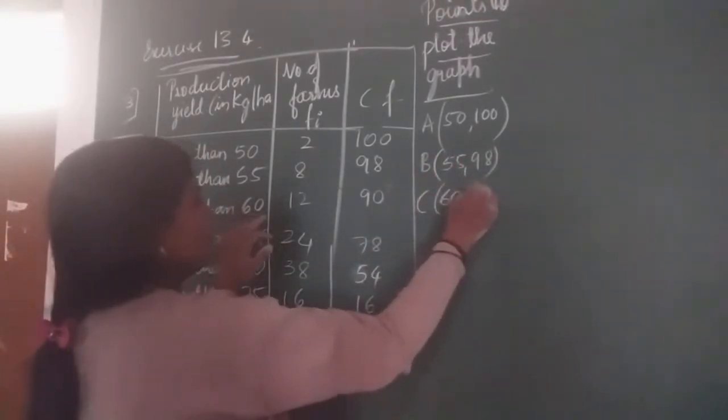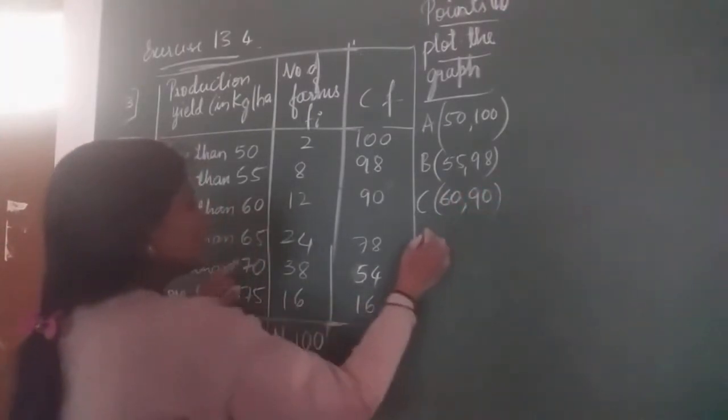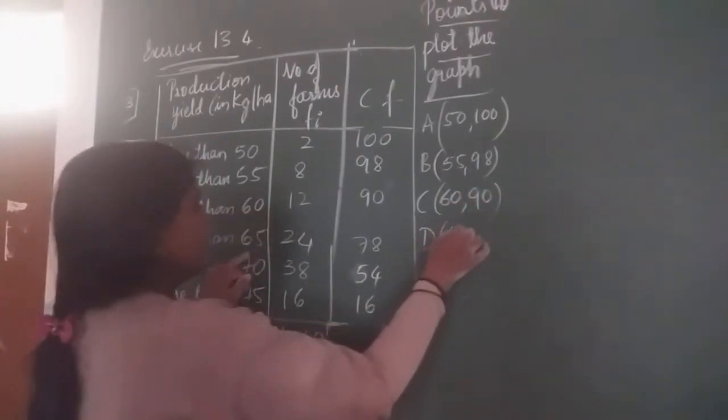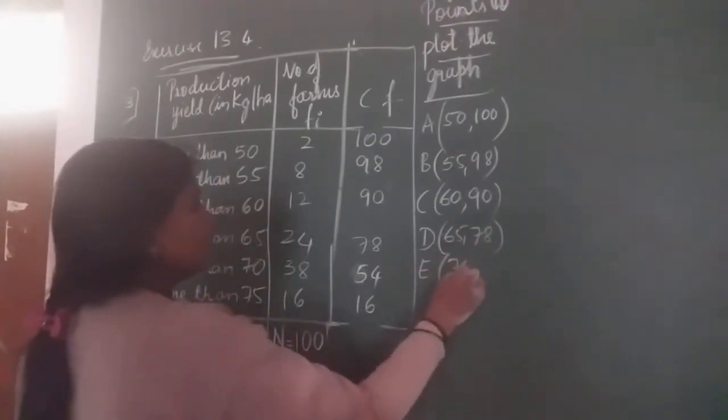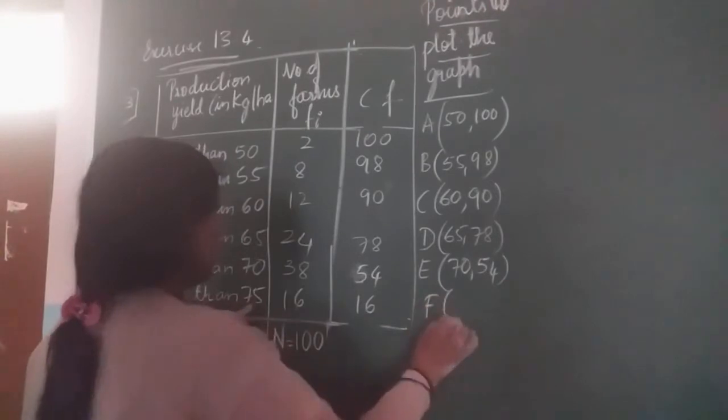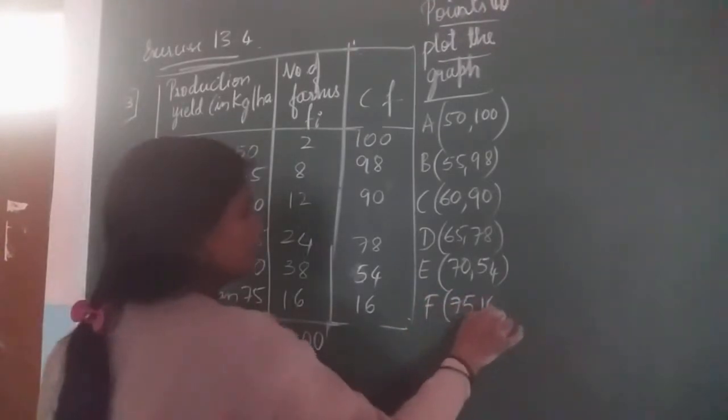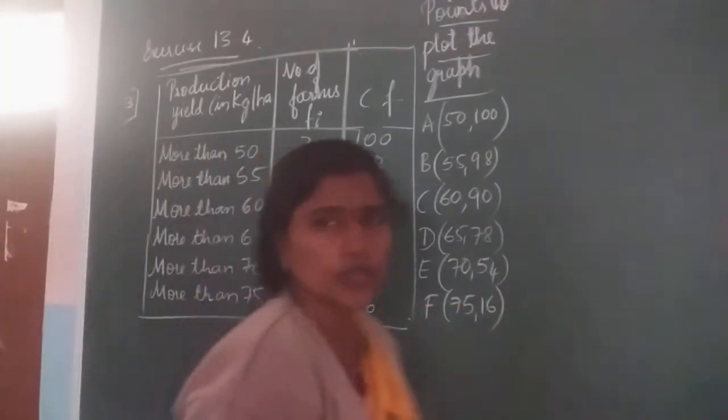Point C is 60, 90. Point D is 65, 78. Point E is 70, 54. Point F is 75, 16. Now we got all the points. Let us plot the graph now.